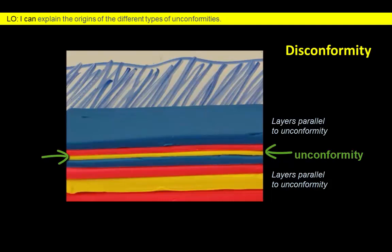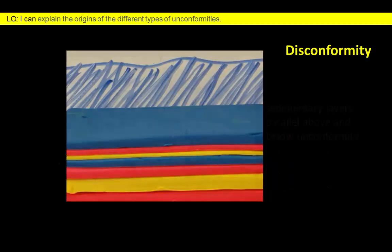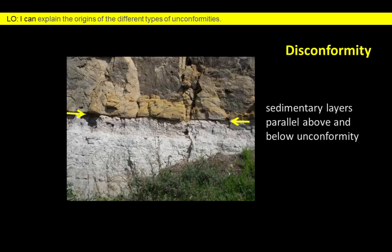Geologists might look for evidence of old soil horizons between layers, or they might recognize that the fossils in the rocks above and below the erosion surface lived many millions of years apart. In this example from Hungary, the different colored layers lie parallel to each other on either side of a disconformity.